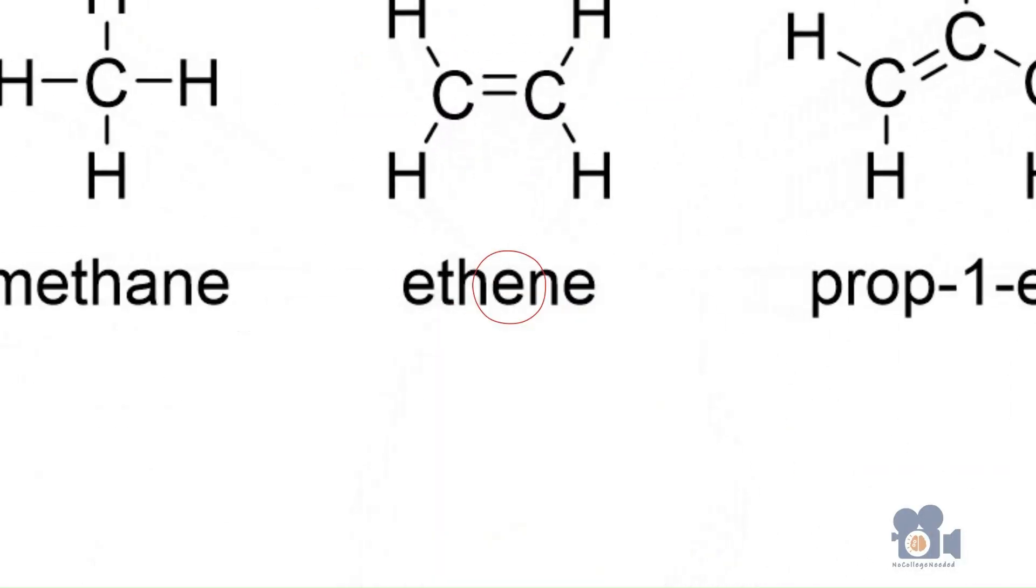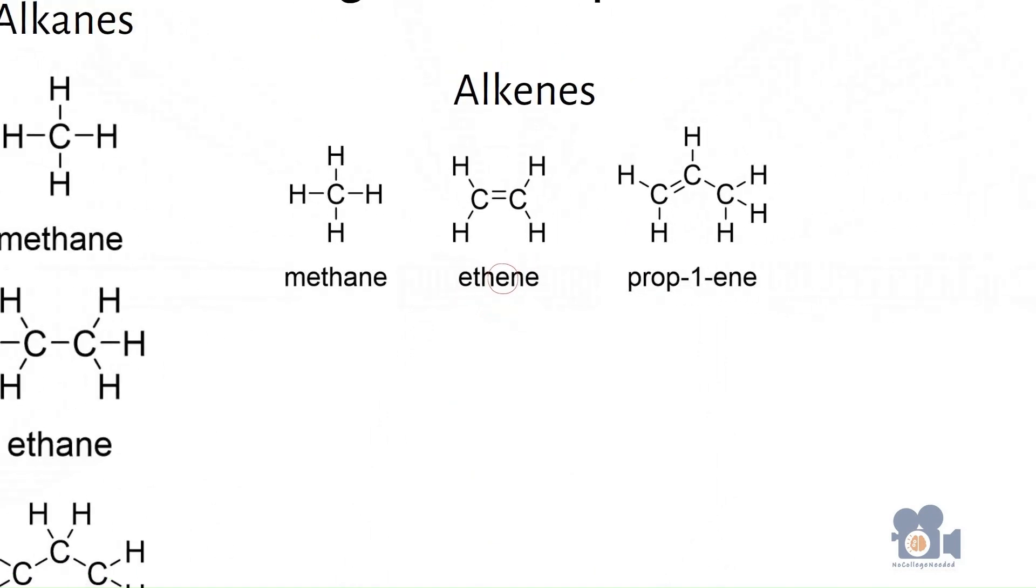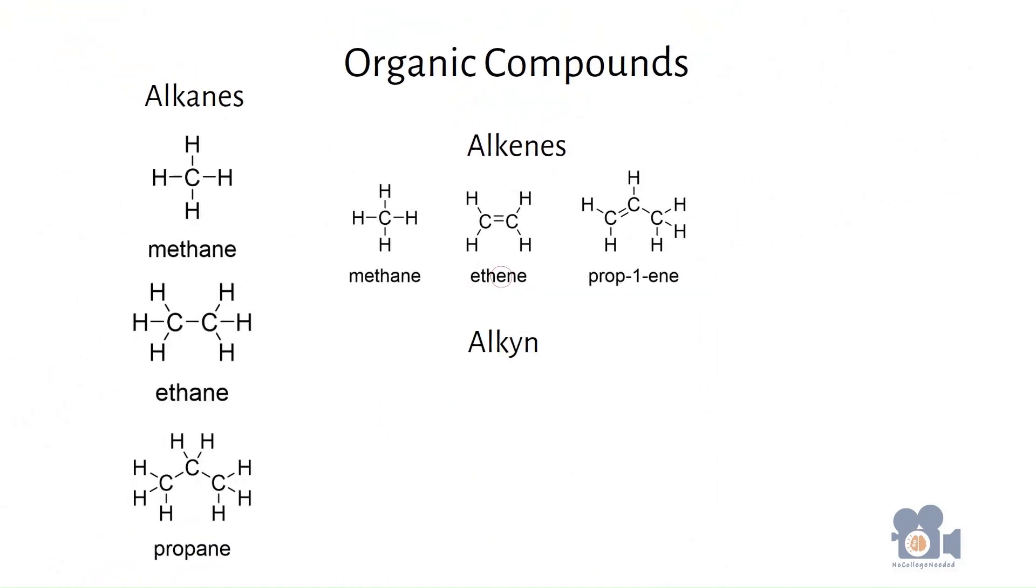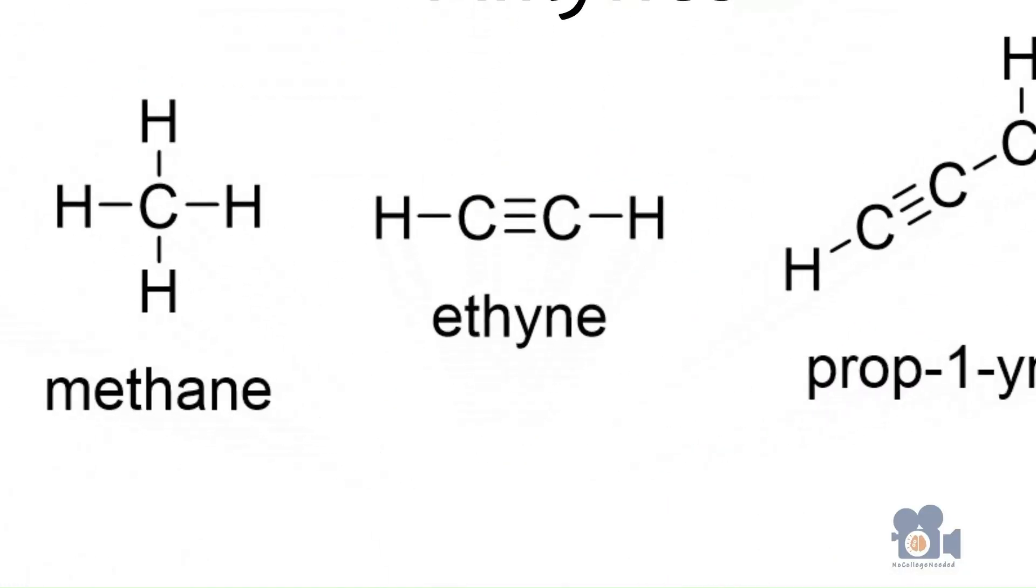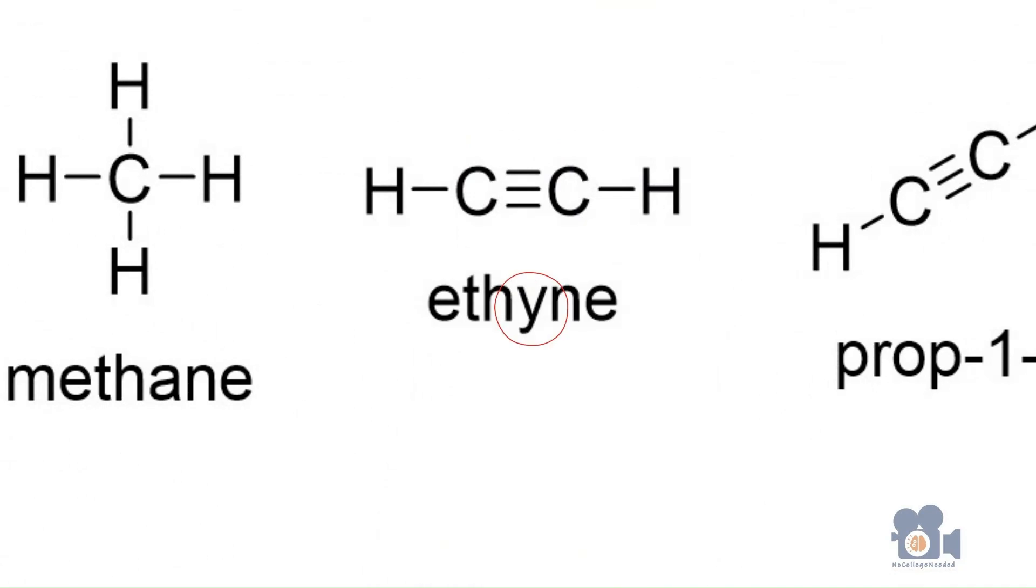If you convert the double bond in alkenes to a triple bond, you now have alkynes, and the E is changed to a Y, but everything else is the same in the name.